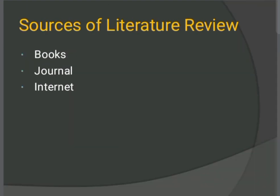The sources of literature review are very important. The main sources are books, journals, and the internet. In journals, there can be a gap of two or three years between the completion of a research project and its publication in a journal — the same happens with books.